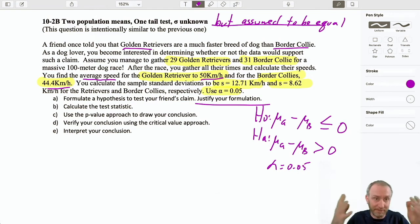The alternative hypothesis, well, that's saying now that the Golden Retriever does go faster. That, on average, their speed is greater than, in other words, they're going faster than the Border Collie.